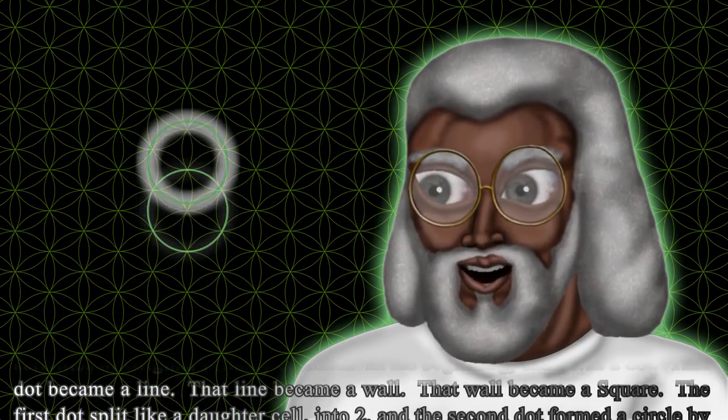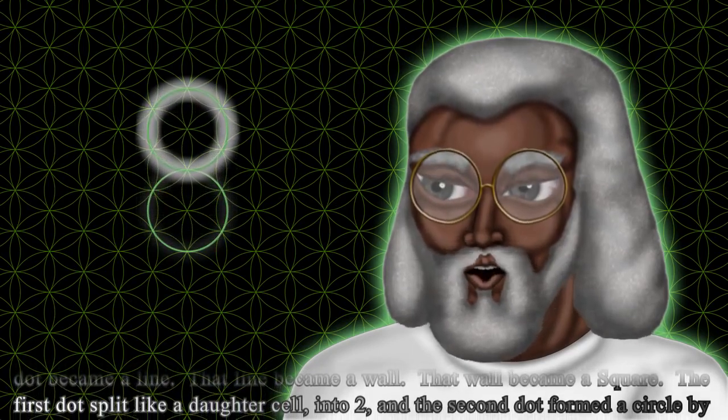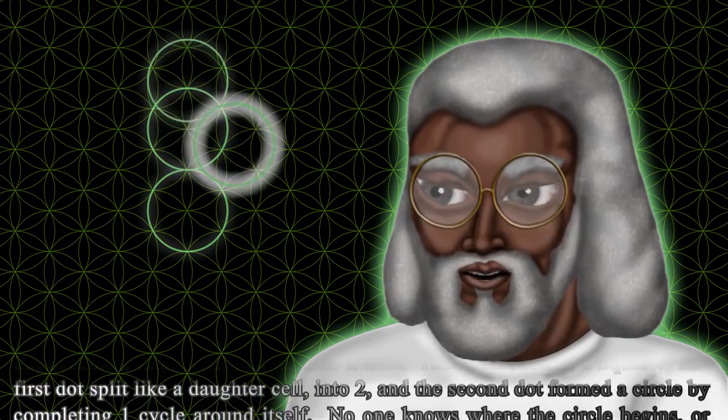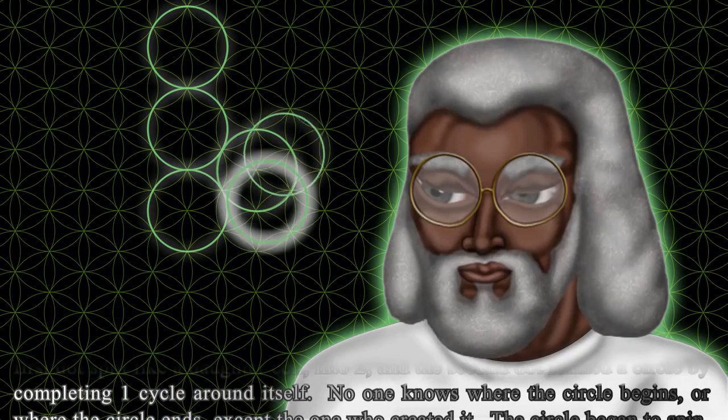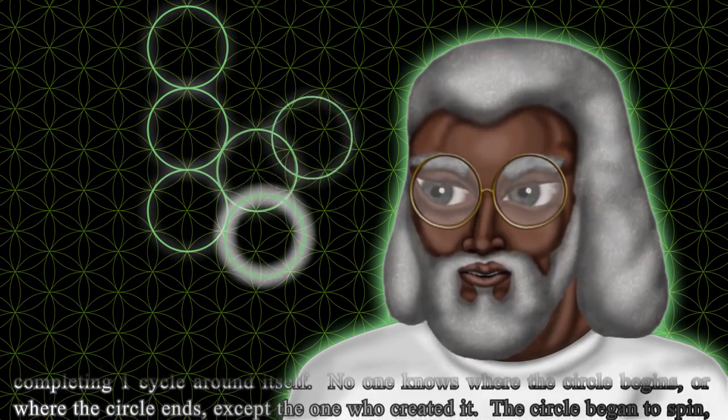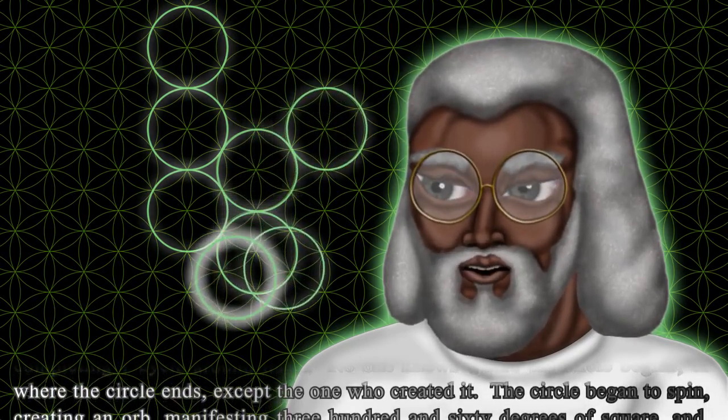That wall became a square. The first dot split like a daughter cell into two, and the second dot formed a circle by completing one cycle around itself. No one knows where the circle begins or where the circle ends, except the one who created it.